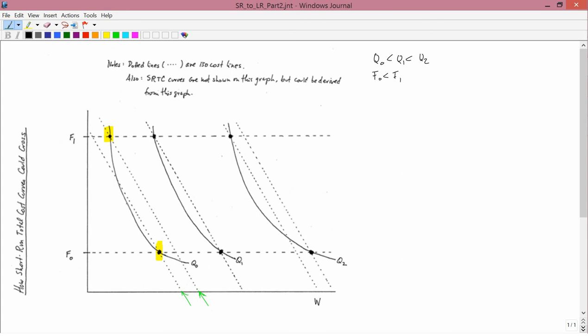Earlier, we called these total costs. We labeled these total cost lines. This is one total cost line. This is another total cost line. And I call them here iso-cost lines. It's the same thing. So the cheapest way of producing Q0, since you only have the choice of F0 and F1, is to go here because that generates a lower total cost.